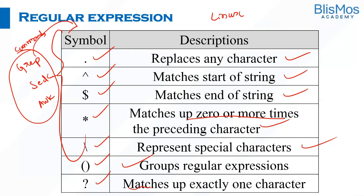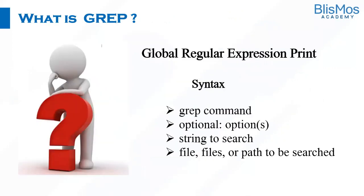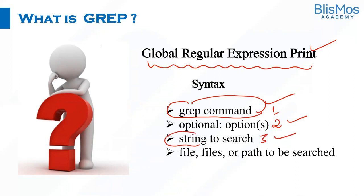Let's look at grep at a very high level as part of this video. What is grep? Grep is global regular expression print. Nice name, isn't it? If you want to use grep for regular expression or matching a pattern, you need to follow this syntax. The syntax consists of four parts: first, the grep command itself; second, you can provide options; third, you provide the string to search; and fourth, you provide either a file name, names of files, or path in which you're trying to search the pattern.